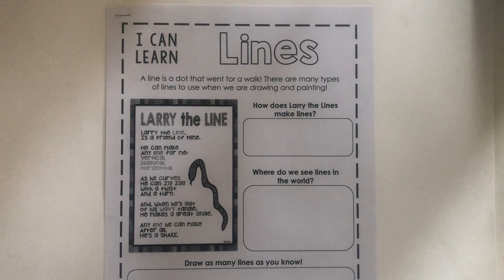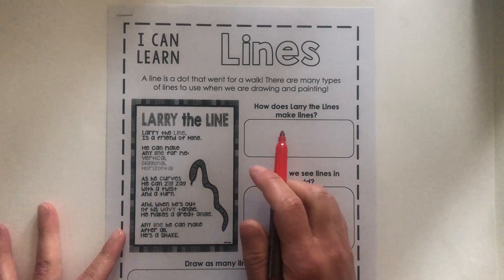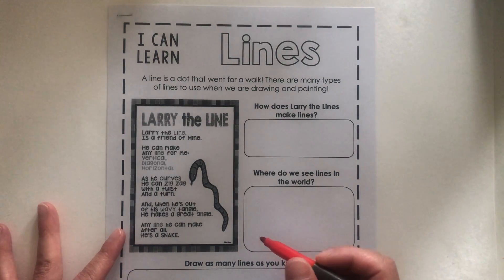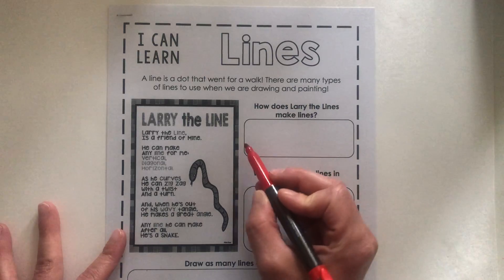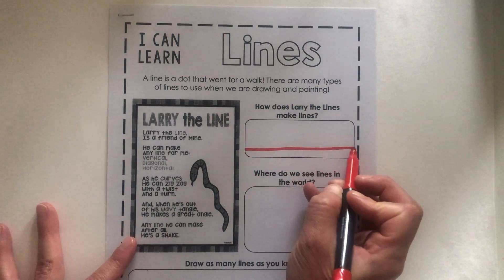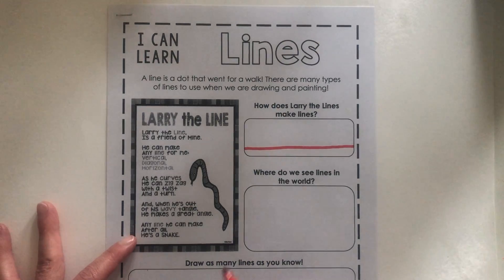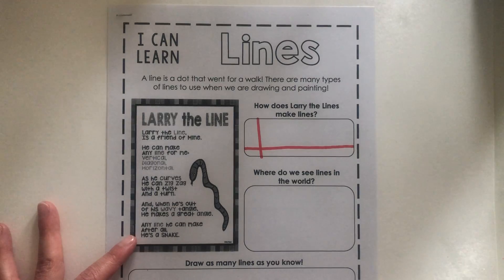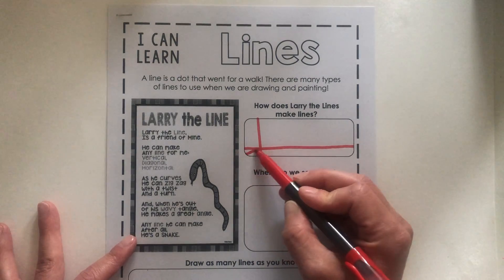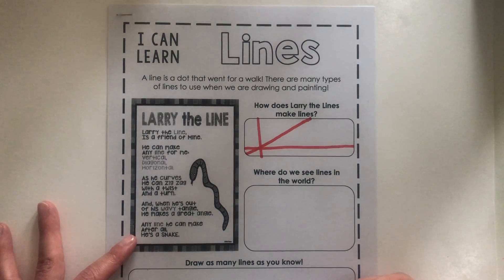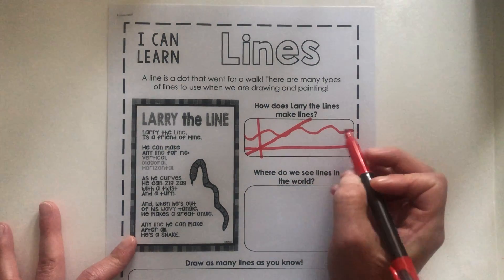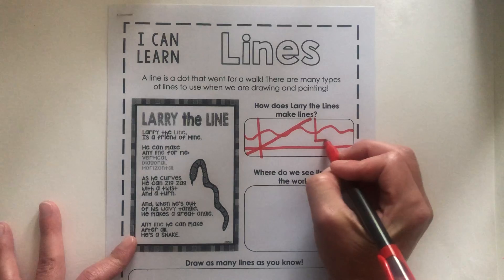I'm going to use a marker and make my paper nice and colorful. In my first box I'm going to draw some of Larry's lines. We know Larry can make a horizontal line, a vertical line, and a diagonal line. We also know he can be wavy, and even make angles.